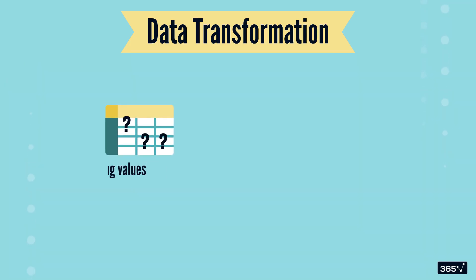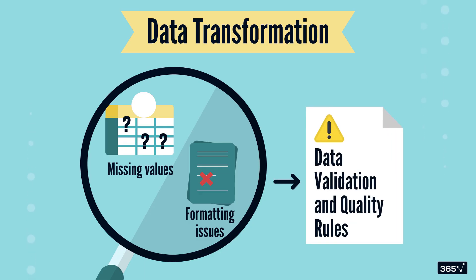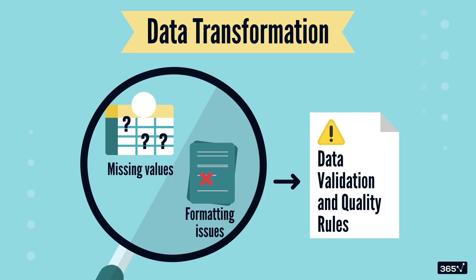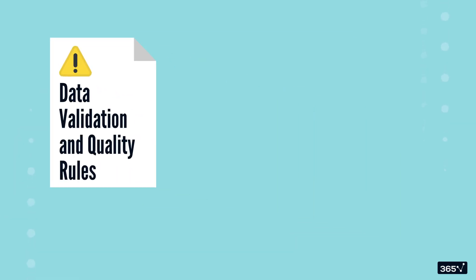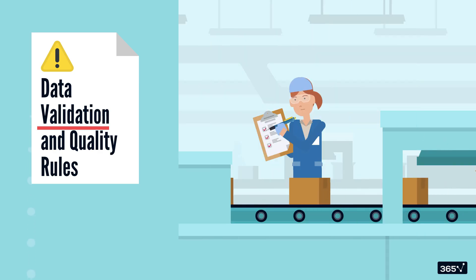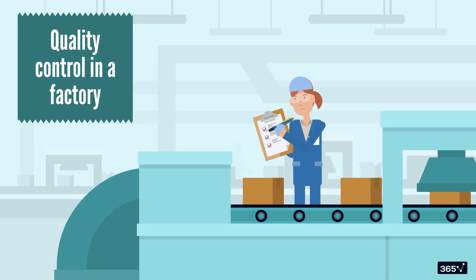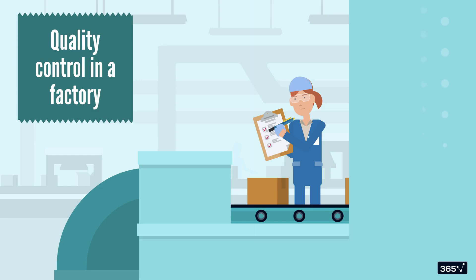To identify missing values, formatting issues, or any other potential issues with the data, we use data validation and quality rules. Validation rules ensure that the data meets specific criteria before it moves on to the next stage. Imagine quality control in a factory — every product is inspected to ensure it meets the standard.